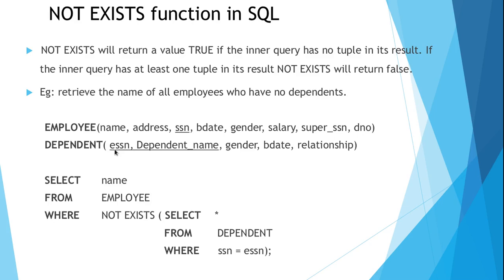SSN should not match ESSN — that is the condition to be checked. The condition is written as the inner query: SELECT * FROM dependent WHERE SSN = ESSN, which retrieves all tuples satisfying this condition. If such a tuple does not exist, then NOT EXISTS returns true and we retrieve the employee's name. NOT EXISTS is just the reverse of EXISTS: if the inner query returns false, NOT EXISTS returns true. So if a tuple satisfying the condition doesn't exist, meaning the employee has no dependent, that employee's name will be retrieved.